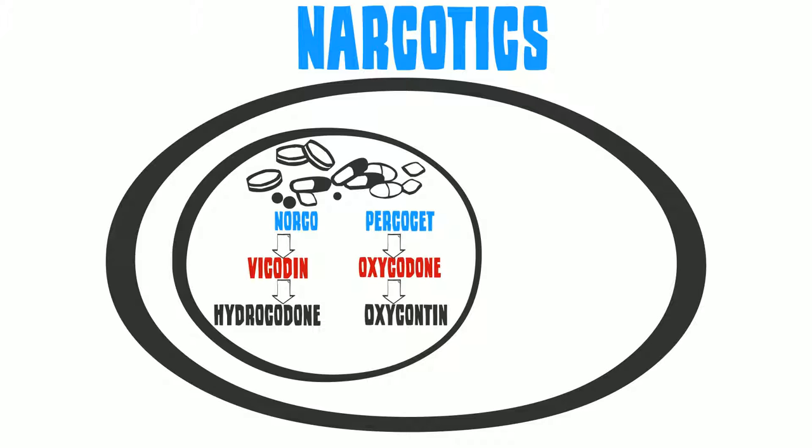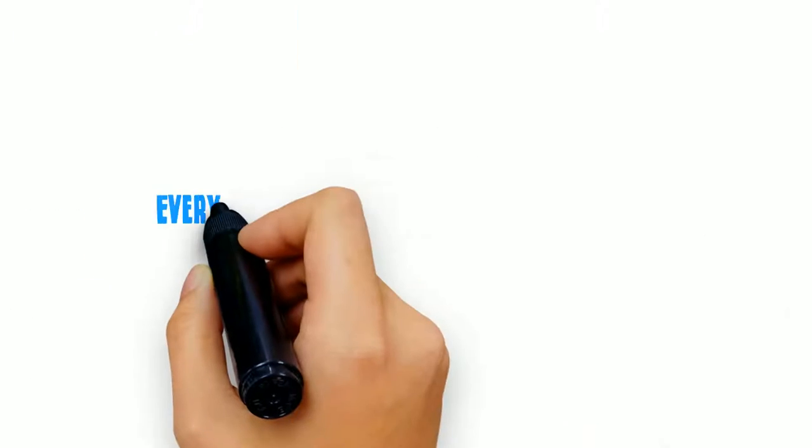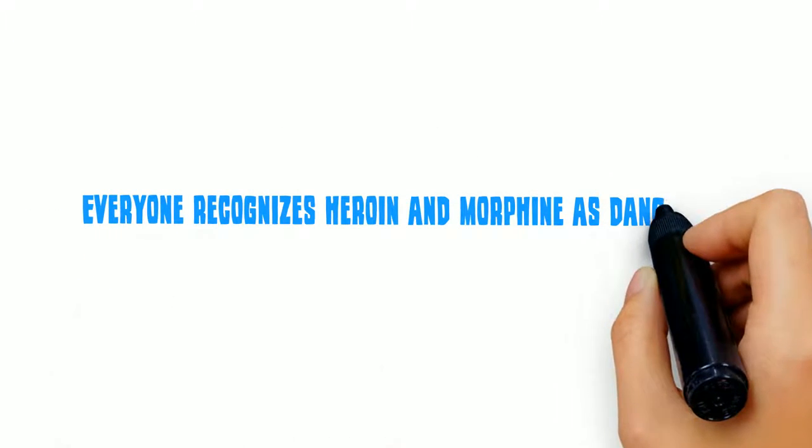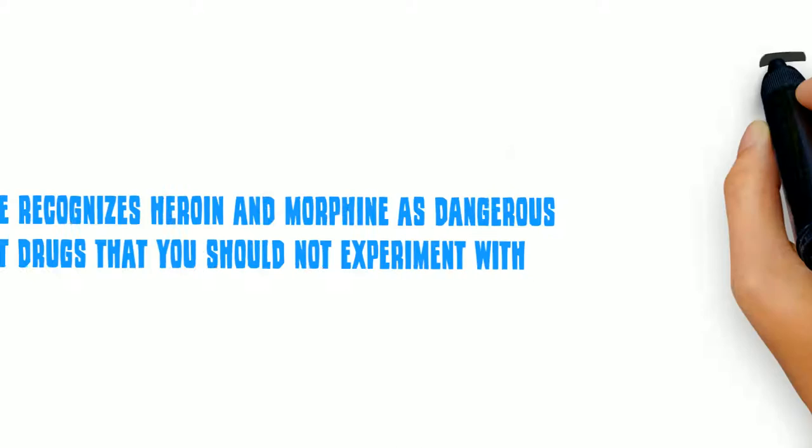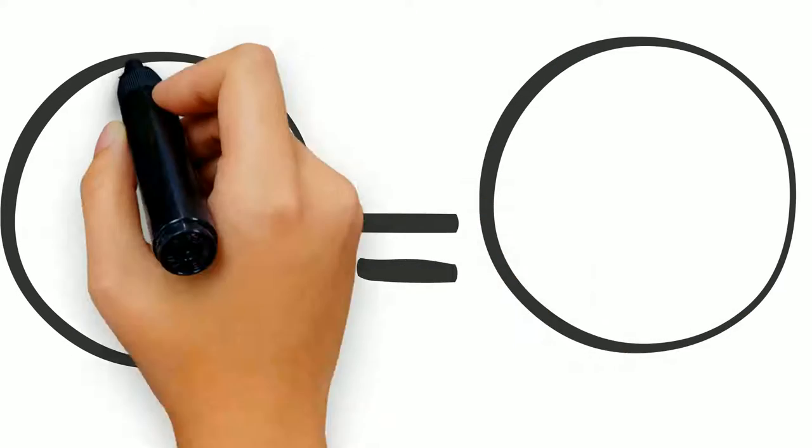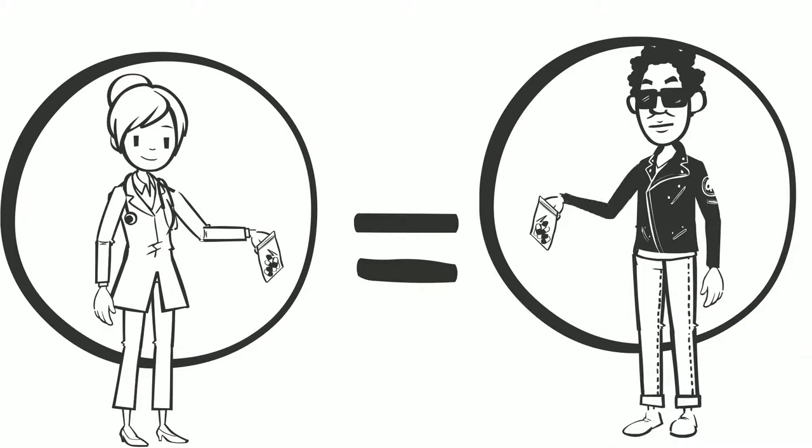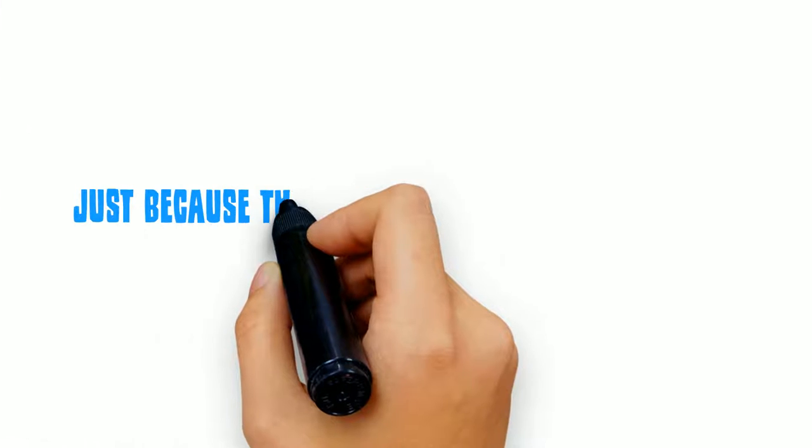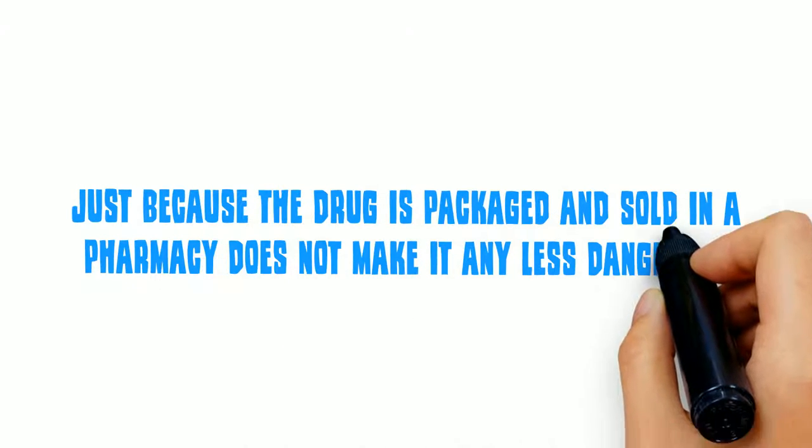This means that these drugs are in the same family as heroin and morphine. Everyone recognizes heroin and morphine as dangerous street drugs that you should not experiment with. However, many patients do not realize that the pain pills prescribed by their doctors have the same potential for causing addiction as street drugs. Just because the drug is packaged and sold in a pharmacy does not make it any less dangerous.